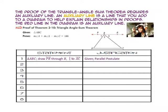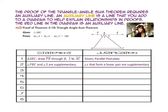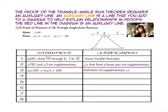For step two, we are going to look at angle PBC and angle 3 as being supplementary. Since they form a linear pair, they are supplementary. By the definition of supplementary angles, the measure of angle PBC plus the measure of angle 3 equals 180. By the angle addition postulate, the measure of angle 1 plus the measure of angle 2 equals the measure of angle PBC.